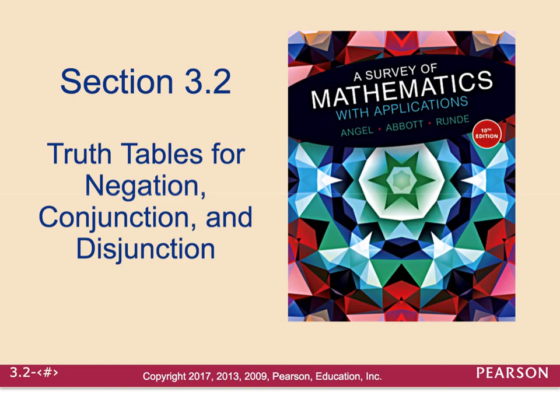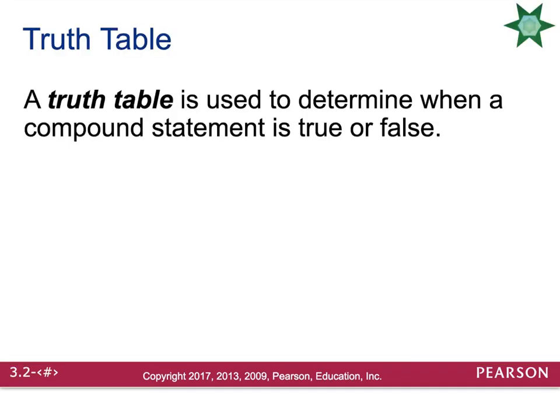Section 3.2: truth tables for negation, conjunction, and disjunction. We're going to start creating truth tables in this section. A truth table is used to determine when a compound statement is true or false. If someone tells you a phrase, you need to break it down into multiple parts and use the truth value from each statement to determine if the entire statement is true.